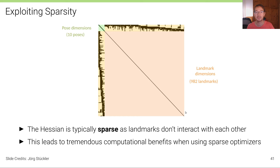These are the pose dimensions in this example, these are the landmark dimensions. And you can see while poses are connected to many landmarks, they are connected not to each other. And landmarks are also not connected to each other, leading to this very sparse matrix. And this leads to tremendous computational benefits when using sparse optimizers.